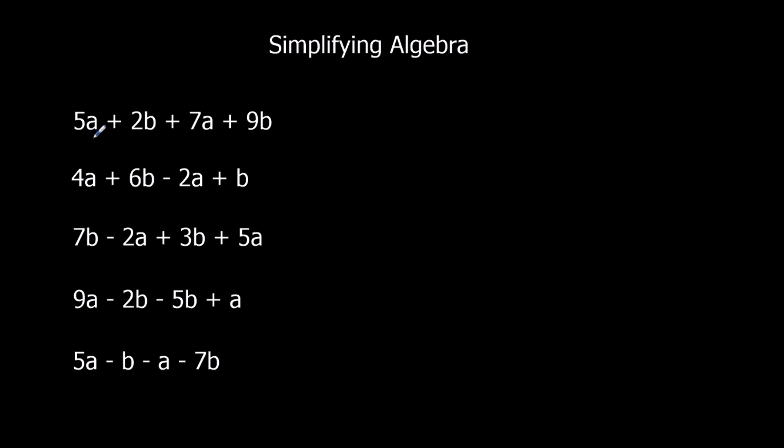Okay, so what we're going to do, we're going to add the a's to the a's, and we're going to add the b's to the b's. So, if I add the a's to the a's, I've got 5 a's plus 7 a's. That's 12a, and I've got 2b plus 9b, which makes 11b. So that is the simplest form, I can't add the a's to the b's.